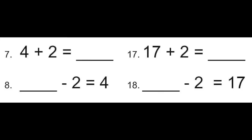Let's focus on number 7 first. Here, we have 4 plus 2, which we know equals 6. Beneath that, we need to figure out what goes in the blank. So, using the addition problem above it, 4 plus 2 equals 6, we can work backwards. So, 6 minus 2 equals 4. The answer is 6. Now let's go on to number 17. Here, we have 17 plus 2, which equals 19. So, working backwards on number 18, we know that 19 goes in the blank, and 19 minus 2 equals 17.